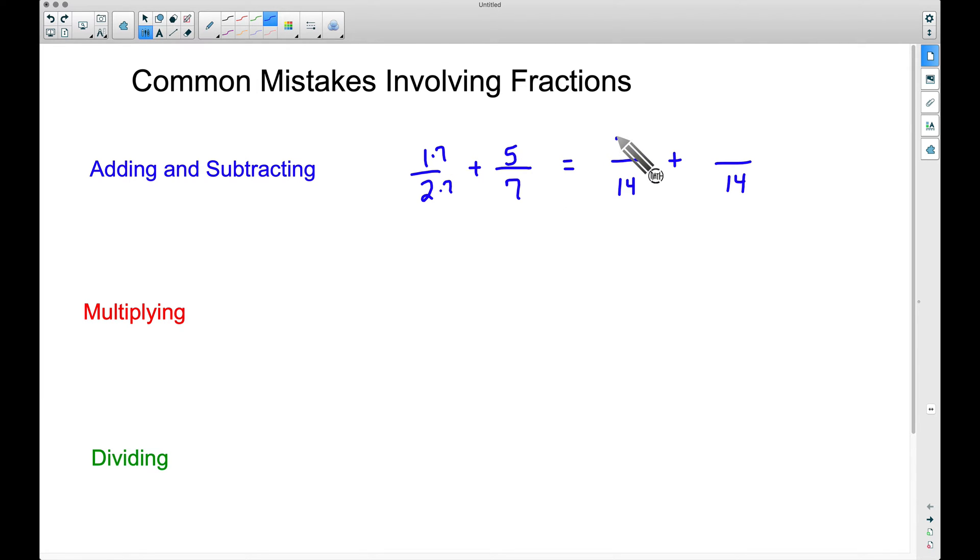1 times 7 gives us 7, and if you look at this new fraction here, 7 over 14, seven out of 14, seven is half of 14, and that's exactly the same fraction we had right here to begin with, 1/2. 7 over 14 is the exact same thing as 1/2.